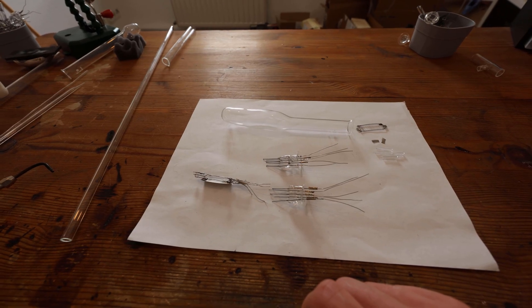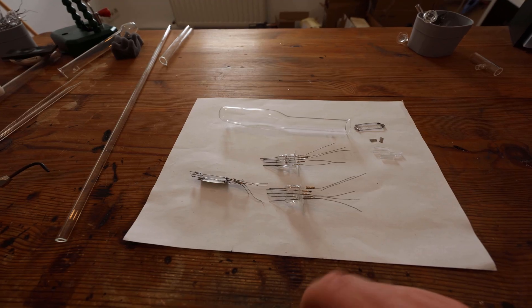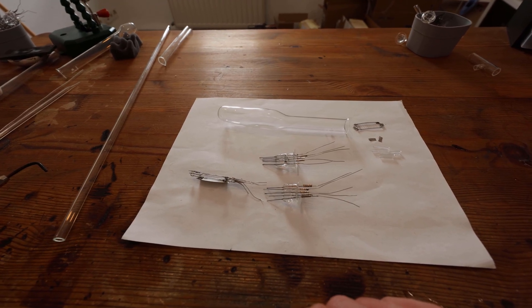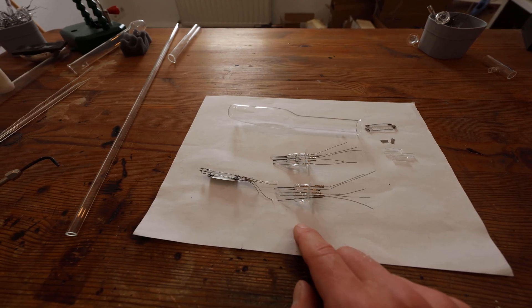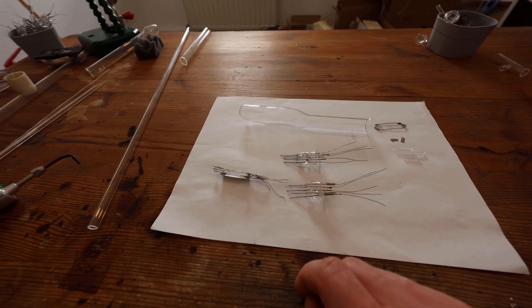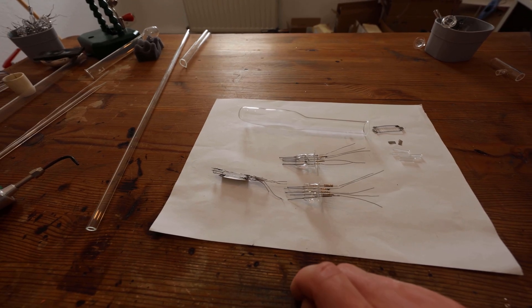And the next step is to build a base for the vacuum tube where the wires seal into the glass. And as you can see I did this already. It's a bit fiddly and complicated, so if you want to see that check out the other triode video I made.